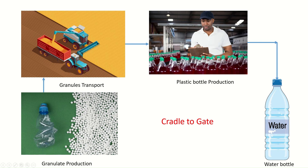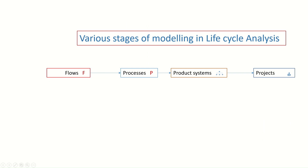We start with the basic elementary requirement for a water bottle, which is granulate production. Once the granulates are produced, they are transported to the site where the plastic bottle is made — possibly in another state or country. The bottle is then filled with water and goes out of the factory. This is called the cradle-to-gate life cycle.